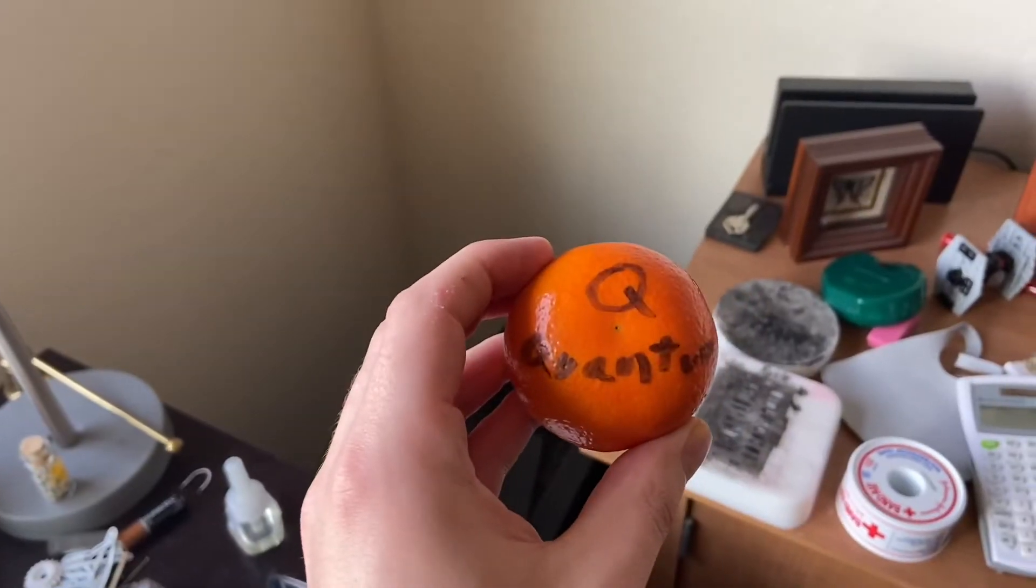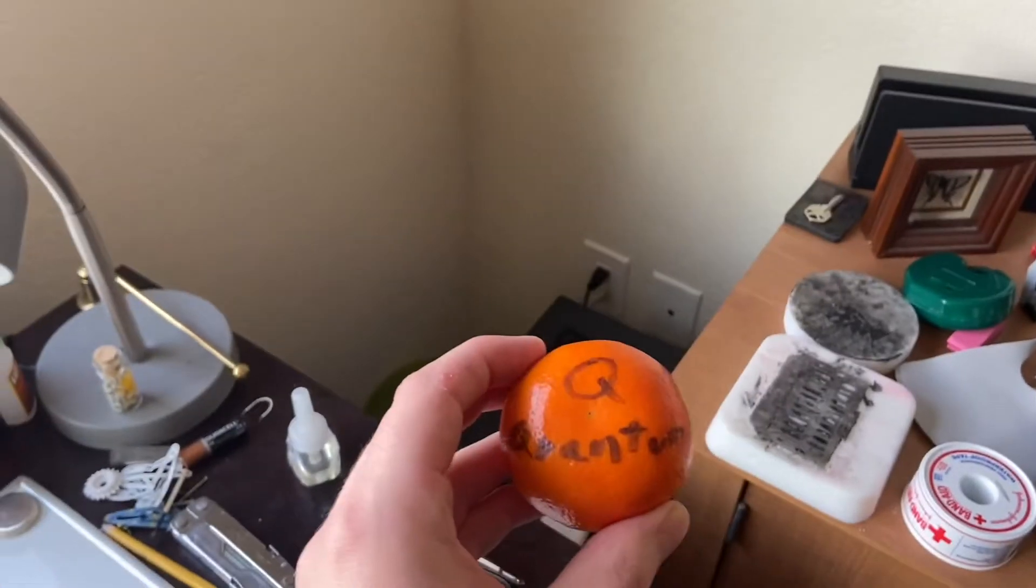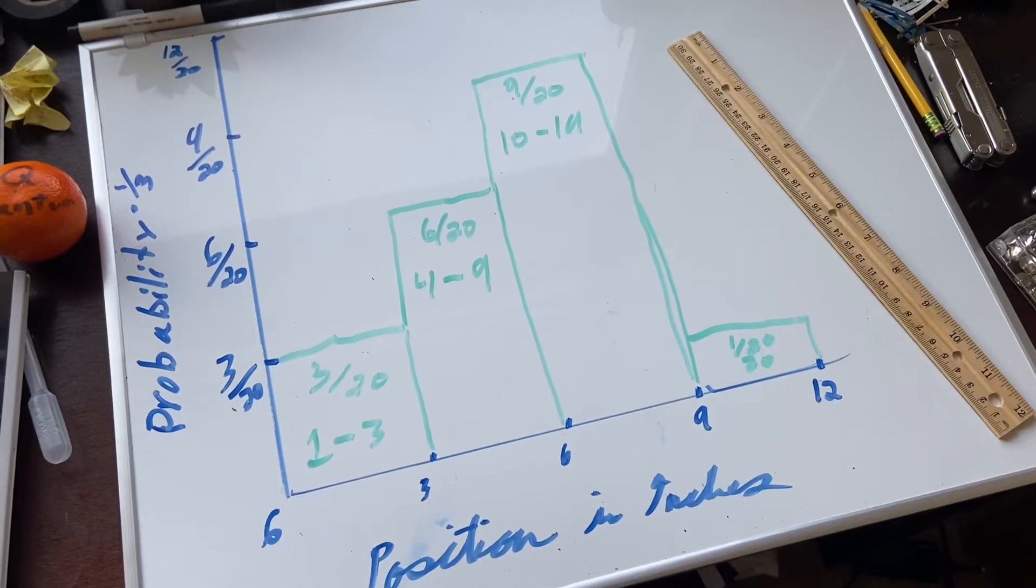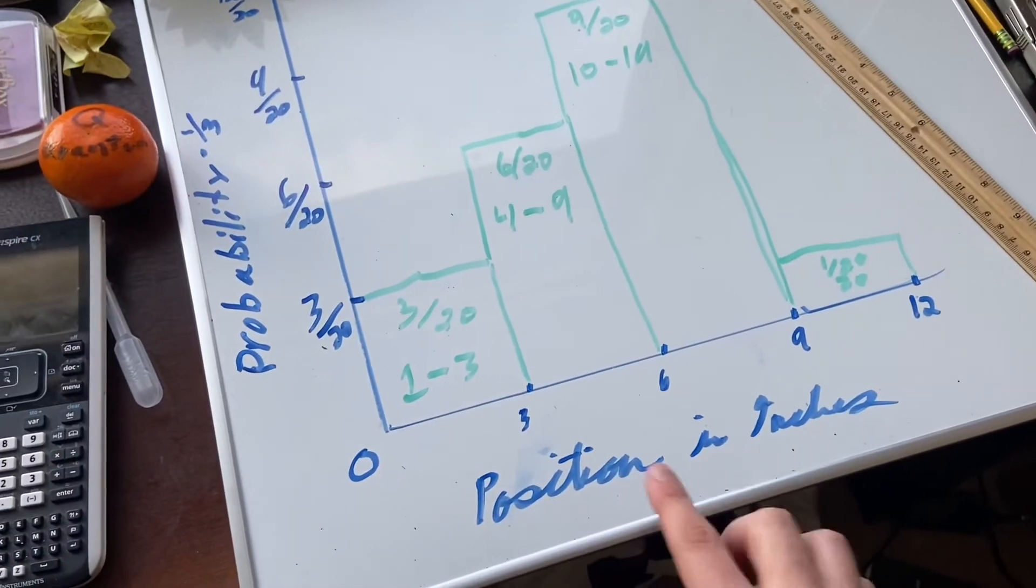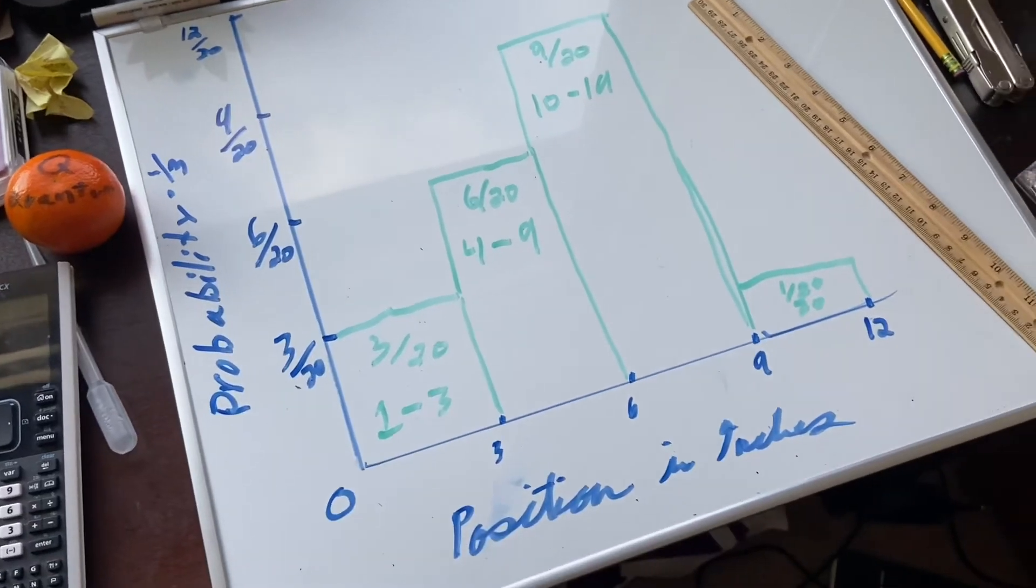All this is to say that when physicists and scientists talk about quantum particles, they're not saying where they are as a point, but more a probability distribution of where they could be. Now if I have an orange that is a quantum orange, it wouldn't necessarily be right here, but it might have something like this as a distribution of where it could be. So what we have here is the position of the orange in inches versus the probability of finding it at that distance.